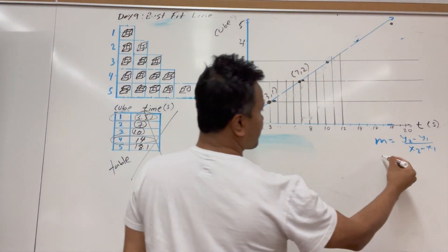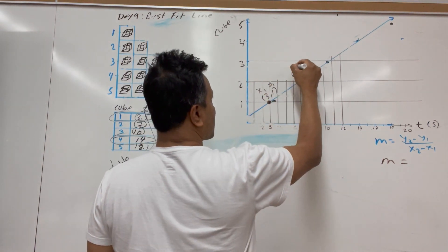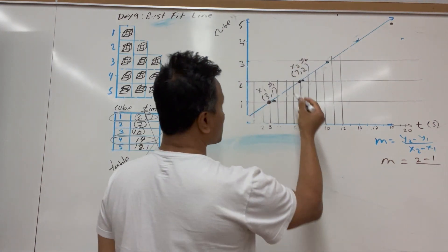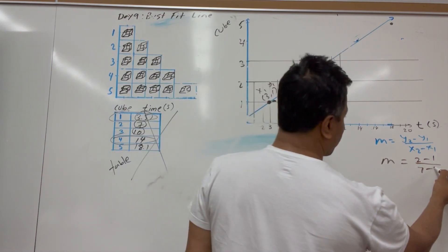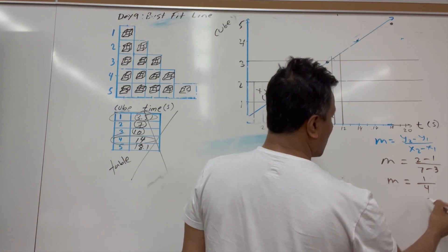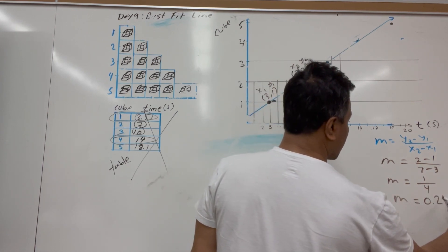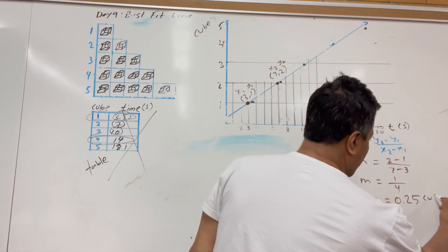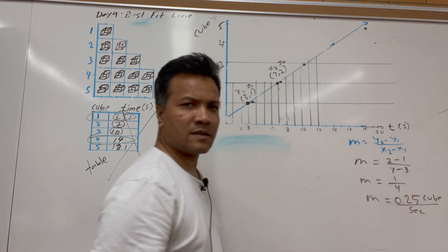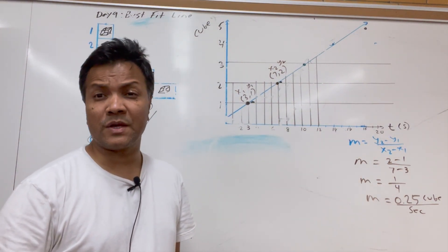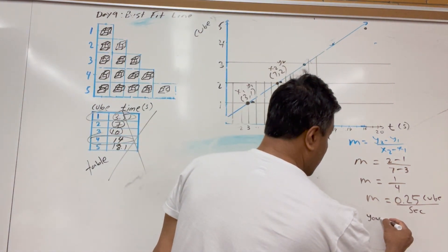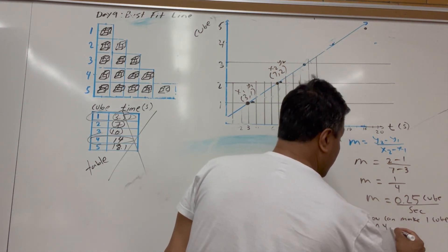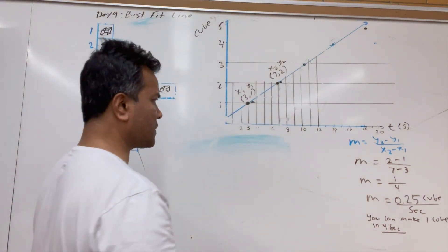So x1 = 3, y1 = 1, x2 = 7, y2 = 2. The slope m = (2−1)/(7−3) = 1/4 = 0.25. The unit is cubes per second. That means you can make one cube in four seconds — that's what the slope means.